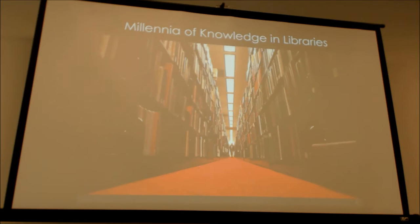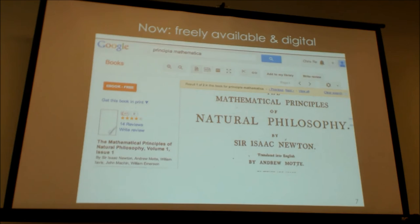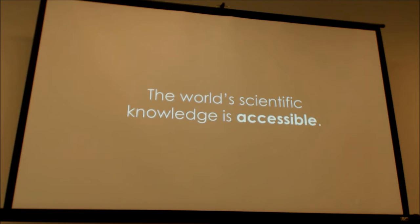Not surprisingly, millennia of knowledge have accrued in places — libraries store knowledge of papers published over the last thousand years. About 15 years ago, something amazing happened: all this information became freely available online. You can type Principia Mathematica into Google Books and get back not only a PDF but an English translation. In a way like never before, the world's scientific knowledge is accessible — it's at our fingertips.